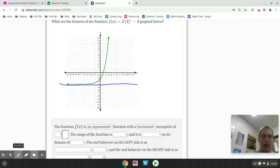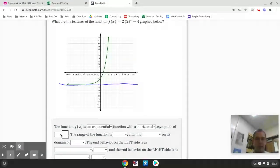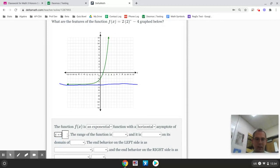This time, at y equals negative 4. And, of course, horizontal asymptotes are always y equals. In this case, it is negative 4.